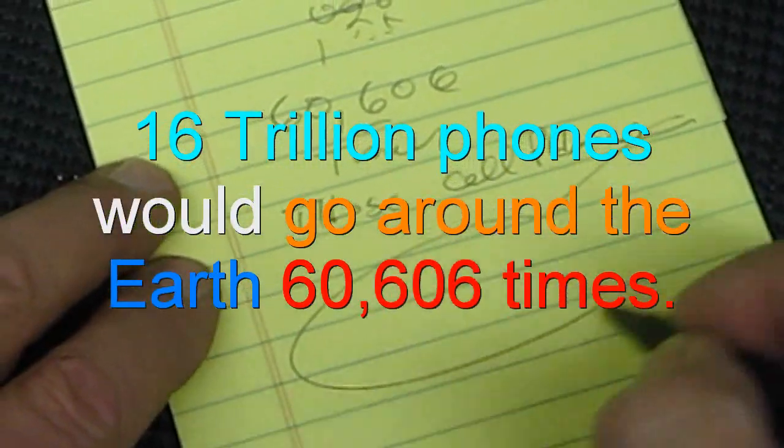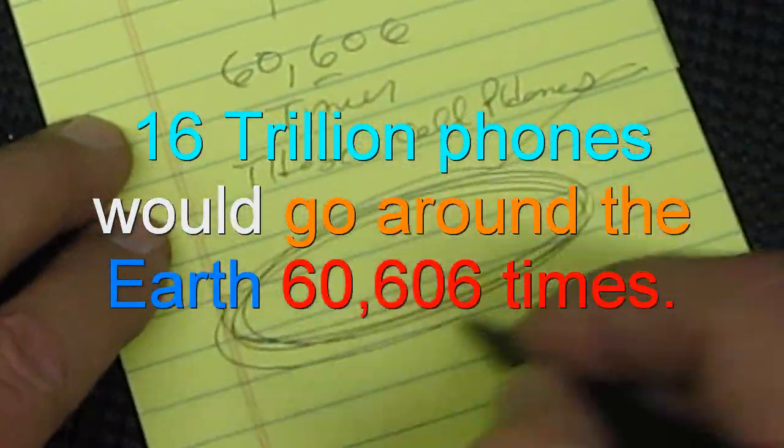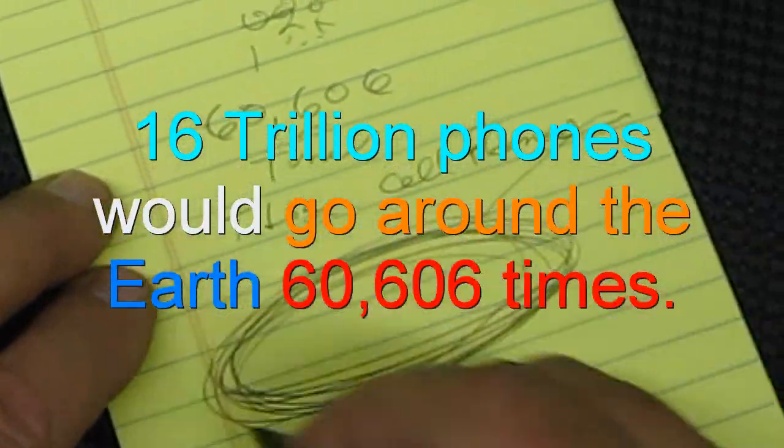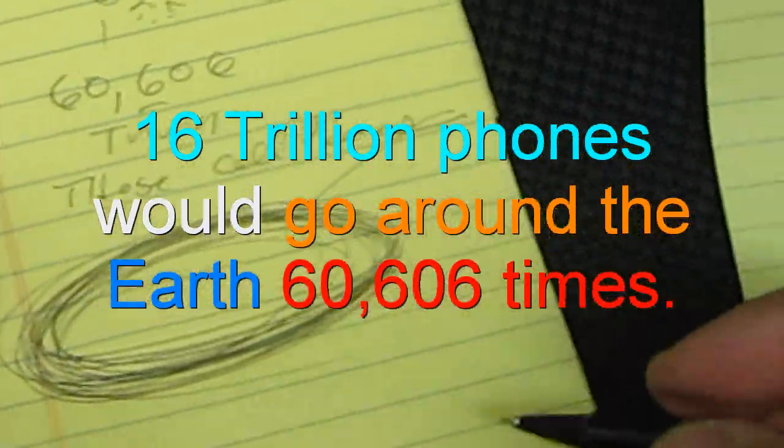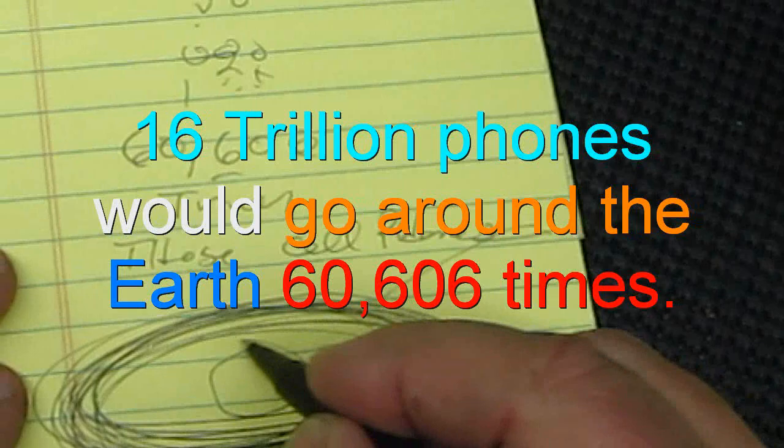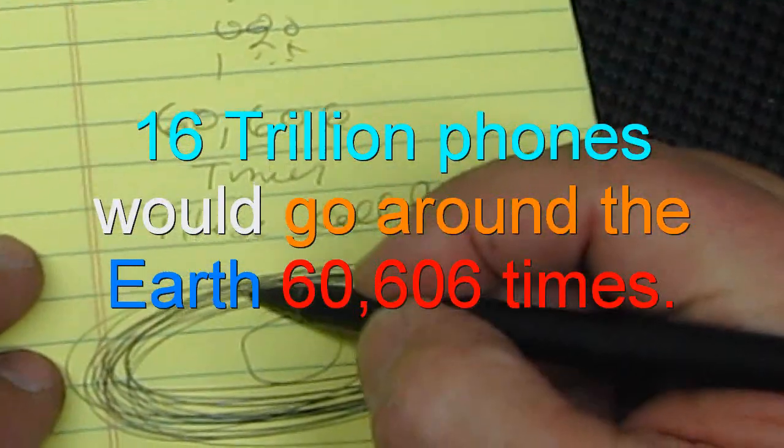It will go around the Earth 60,000 times. Now if you were to completely take the earth and set these on top of each other like this, cell phone, cell phone, cell phone, at a half inch high, okay, at a half inch high, this would be what.